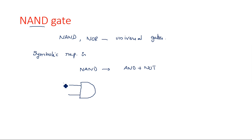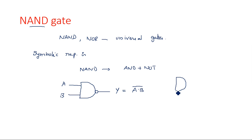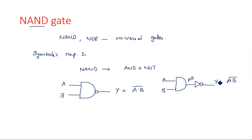For a two-input NAND gate with inputs A and B, at the output we will have a NOT gate bubble. The output Y is equal to AB bar — that is the standard NAND operation. The bubble represents the complement. We can also draw the same figure as an AND operation followed by a NOT gate, giving output AB whole bar.